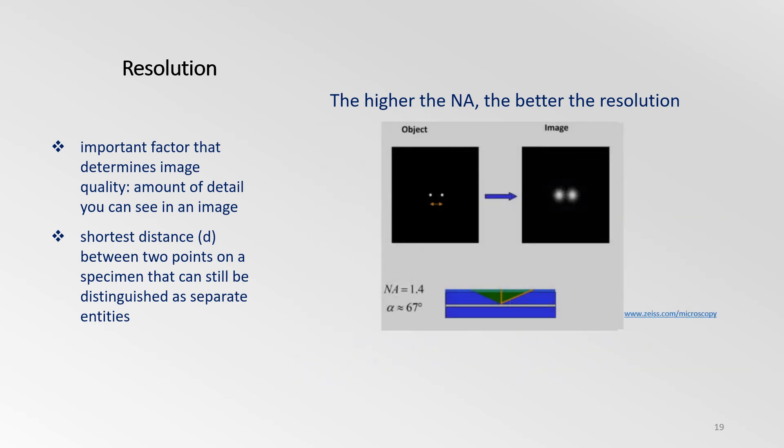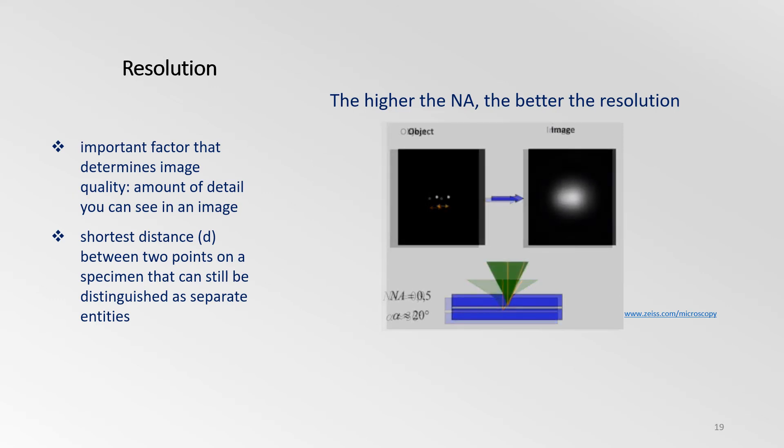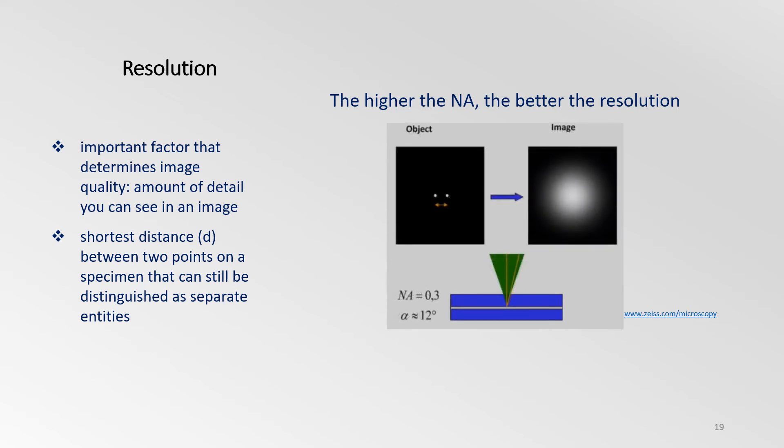When viewing two small points through a microscope, the image of these points appears larger. However, with a high NA objective, you can still see these two objects. But once we start going through lower NA objectives, we start losing resolution, and eventually lose the ability to determine how many objects are actually present.